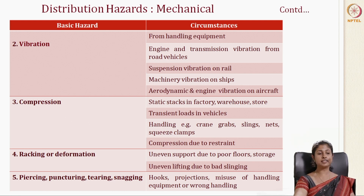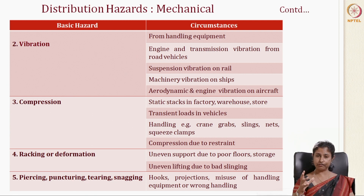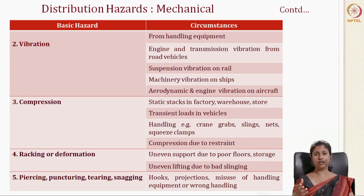Another mechanical hazard is deformation or racking — when a package is placed on an uneven support on a floor or storage space, causing deformation. Uneven lifting due to bad slinging can also cause deformation, changing the package shape. Piercing, puncturing, and tearing can happen when loading or unloading with hooks or projections, or due to misuse of handling equipment.